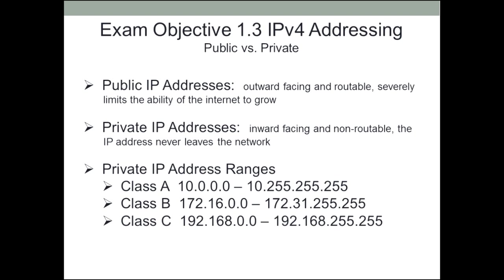Public versus private addresses. The advantage of a public IP address is that it is routable, and you usually only find those on the outward-facing point of a router. Because they are routable, everybody can see them and anybody can send packets to them. The problem with public IP addresses is that it severely limits the ability of the internet to grow, just because there are so few IP addresses available. The way to fix that: they created private IP addresses. These are inward-facing local networks, and they are non-routable. You can try to route one of these addresses out to the internet, and the router will just bounce it — these addresses never leave the local network.